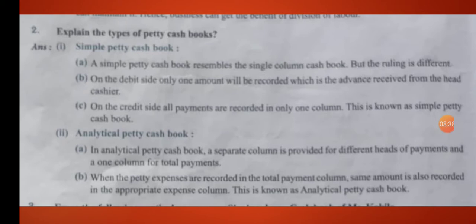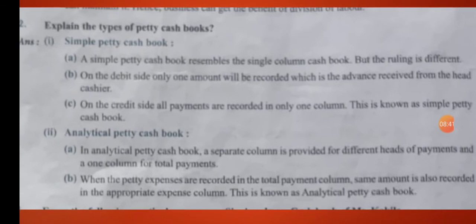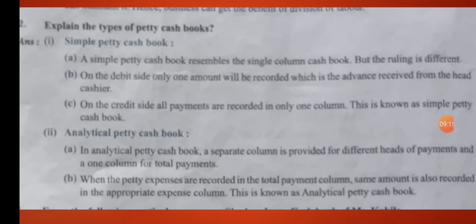Simple petty cash book resembles the single column cash book, but the ruling is different. On the debit side, only one account is recorded — the advance received from the head cashier. All received items are mentioned on the debit side. On the credit side, all payment items are recorded in only one column. This is known as the simple petty cash book.